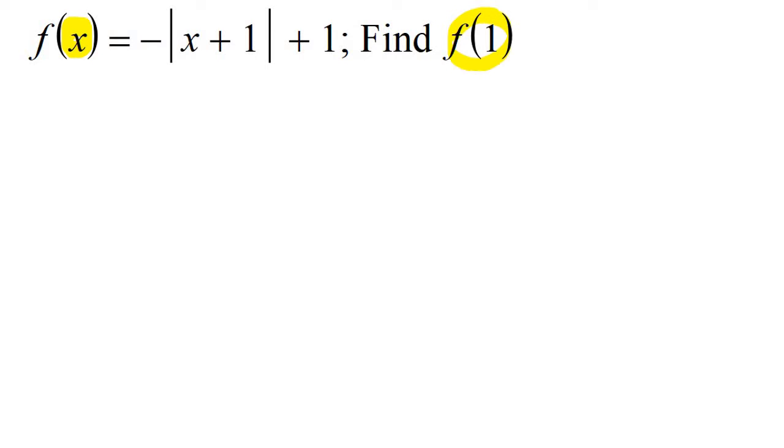So if they then do something like this, then what are they doing? They're telling you that the x value. See, the f is the same. The f doesn't change. There's an f there, and there's an f there. But what they've now done is they've changed the x value to a 1. Can you see that?